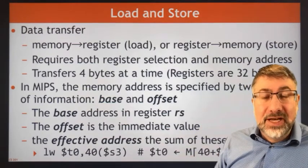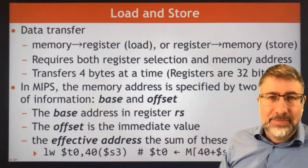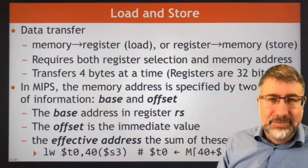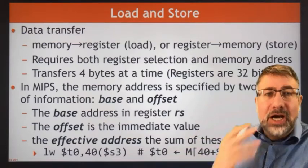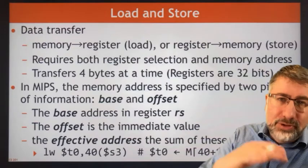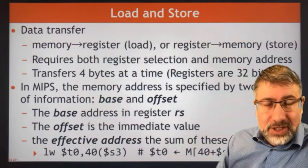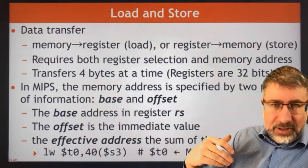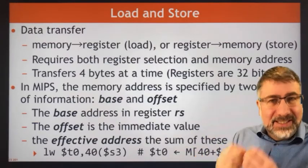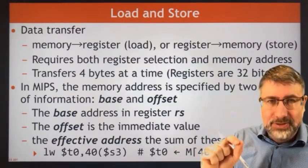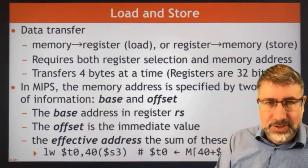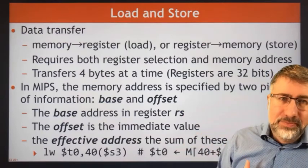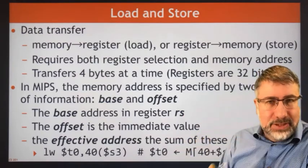For both load and store, we need an address — which tells us where in memory to look up that piece of information — and we need a register in the register file to pass information back and forth. This is why we use RT as both a source and destination: in load and store operations, information can go one way or the other. Load comes into the register file; store goes out. But for simplicity and consistency, RT is always the data register. That means RT is the source for a store operation and the destination for a load operation.